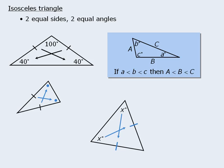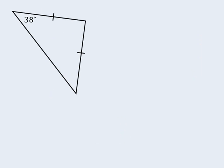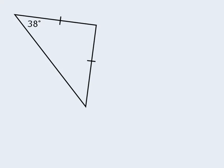One of the nice properties of isosceles triangles is that once you know one angle, you can always find the two remaining angles. Take this example. If we know one angle, what are the two remaining angles? The two angles opposite the two equal sides must be equal, so this other angle must be 38 degrees. Now that we know two angles in this triangle, we can use the fact that all three angles must add to 180 degrees to determine that this last angle is 104 degrees.